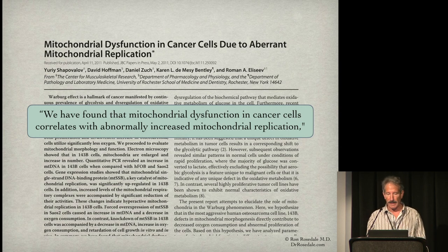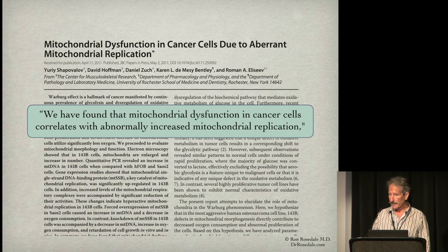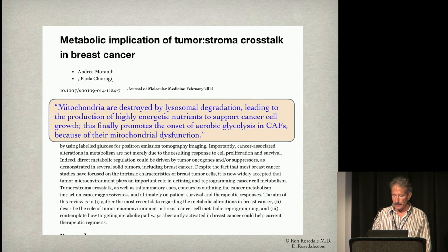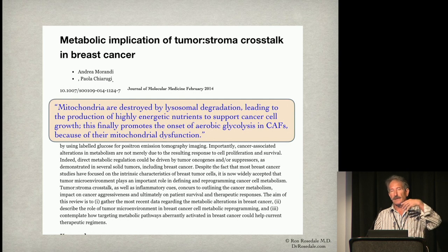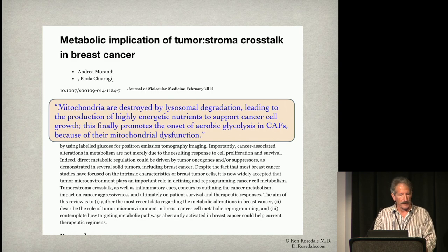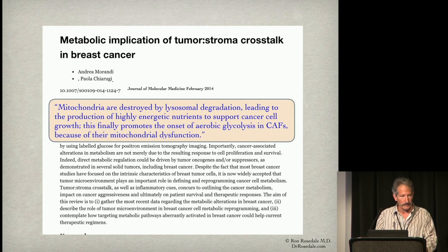Mitochondrial dysfunction in cancer cells correlates with abnormally increased mitochondrial replication. Rapidly dividing cancer cells require rapidly dividing mitochondria, and rapidly dividing mitochondria has less quality control — producing more mitochondrial damage. Also, mitochondria are destroyed by lysosomal degradation to produce highly energetic nutrients supporting cancer cell growth. When cancer is rapidly multiplying and prefers glycolysis, there's no need for as many mitochondria — it will eat them, producing fewer and damaged mitochondria. The cancer is actually causing whatever mitochondrial damage is observed.